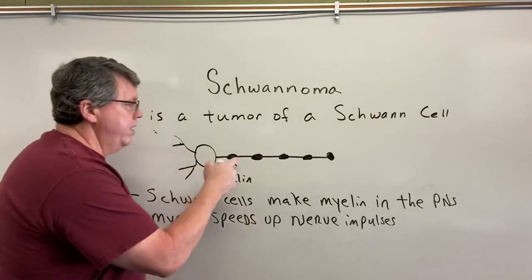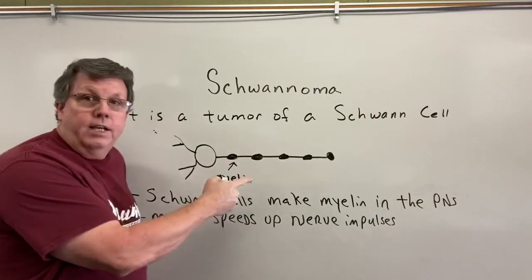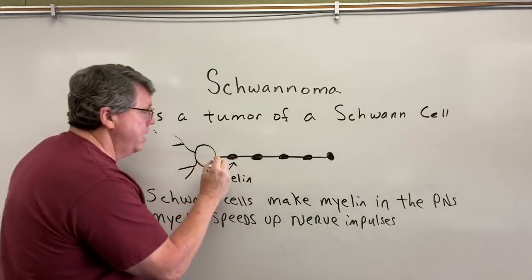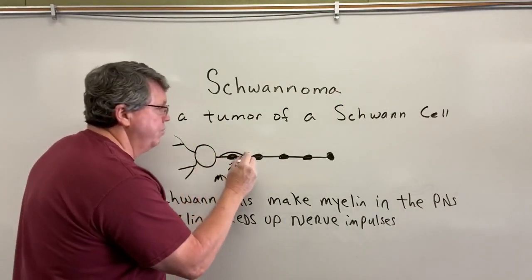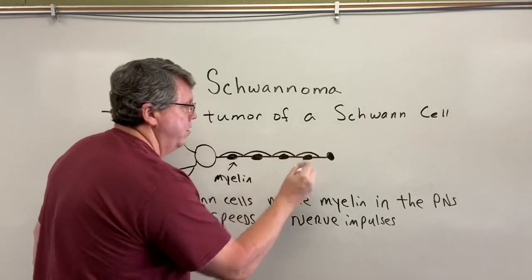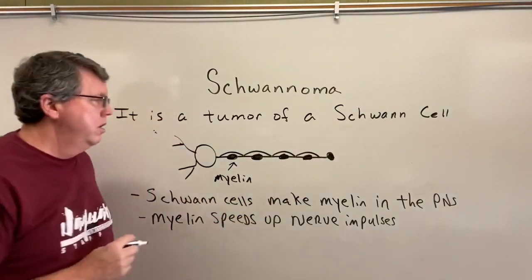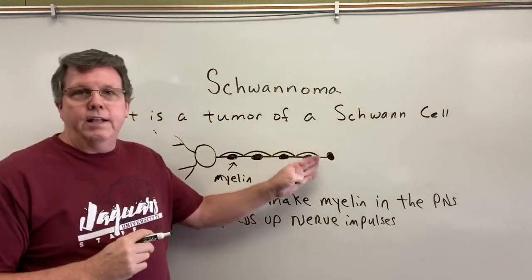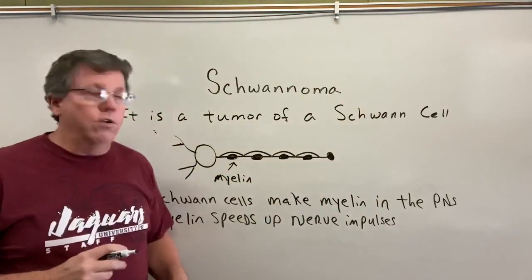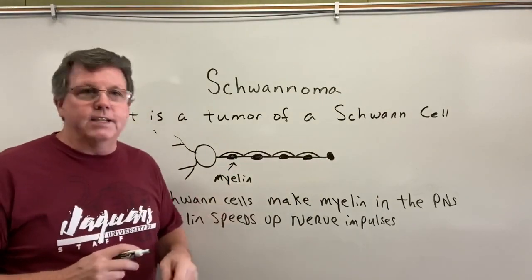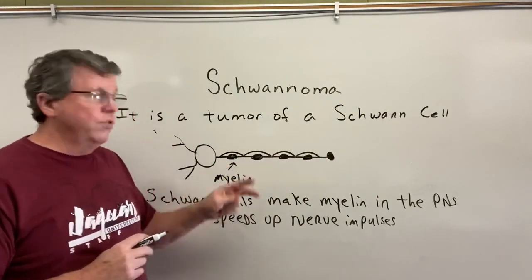What happens when a nerve has myelin on it is the impulse basically skips over the myelin to travel down the nerve, and the nodes of Ranvier is actually where you have the impulse.